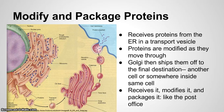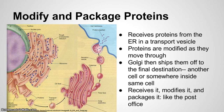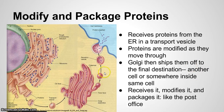It receives the proteins, it modifies them — it's kind of like editing them — it packages them, and it's like the post office of the cell. It's not going to really change the protein; it's just looking for anything that could be wrong, and it's going to edit it. That transport vesicle is like the UPS truck or the mail truck that's going to deliver it somewhere. We need the transport vesicle to get to the Golgi, but we also need more transport vesicles to move it around the cell.